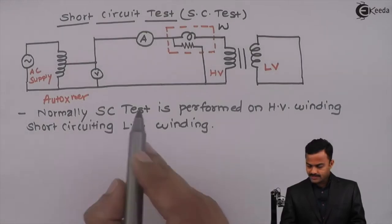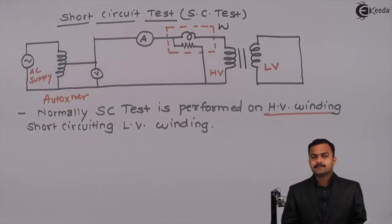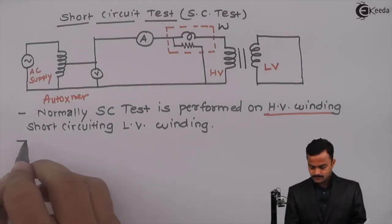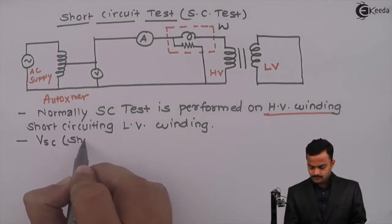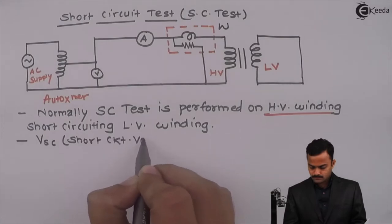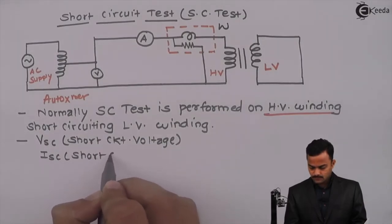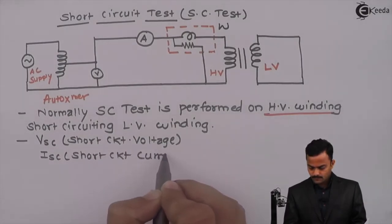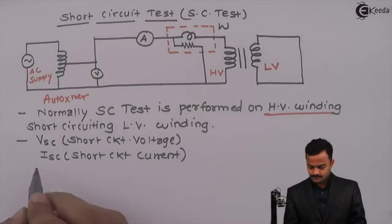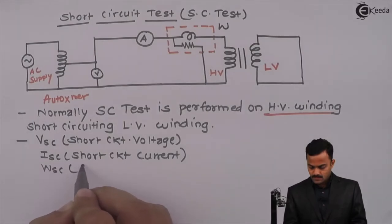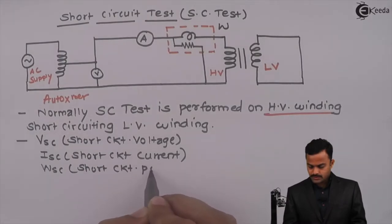So, short circuit test is performed on the high voltage winding. The readings we get are VSC — the short circuit voltage; ISC — the short circuit current, which is comparable with the full load current; and WSC — the short circuit losses, or short circuit power.